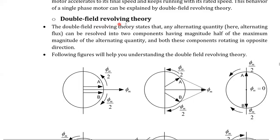Double field revolving field theory. In this double field revolving field theory, there are two types of alternating quantities. By taking two types of alternating quantities, you can easily understand this concept of double field revolving theory.